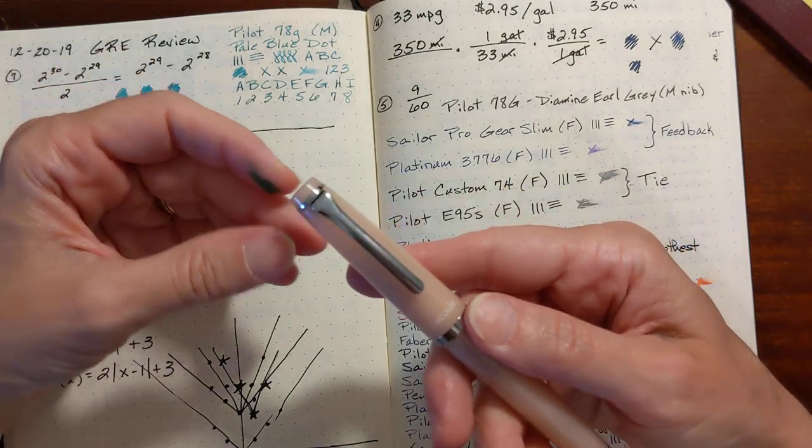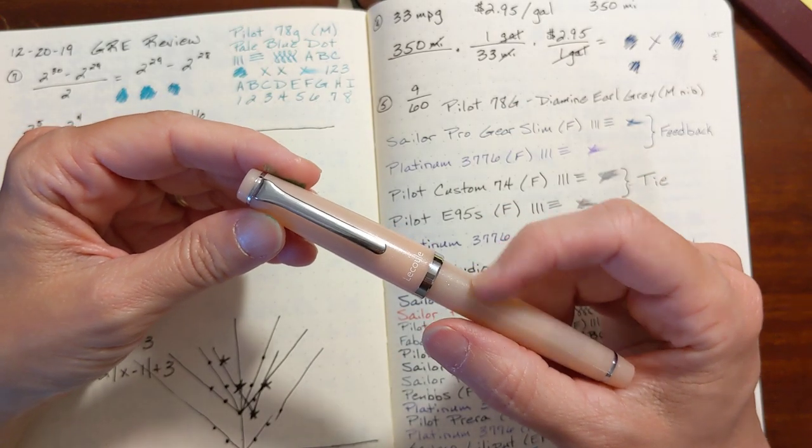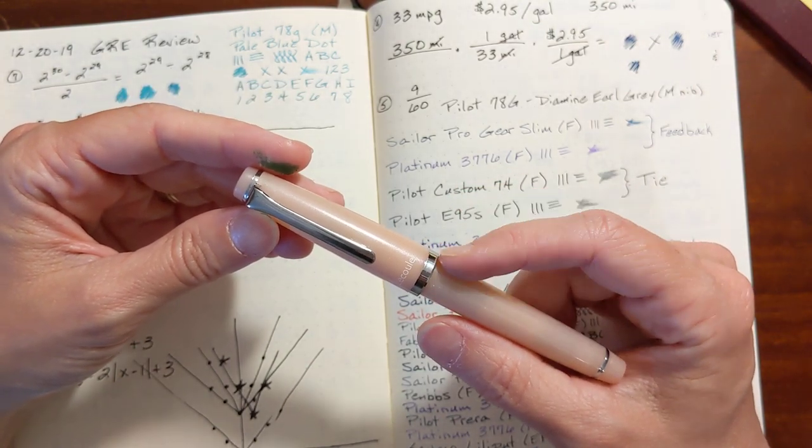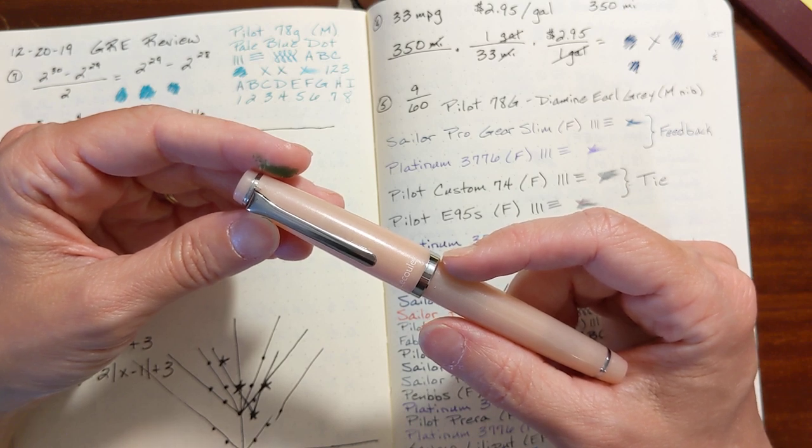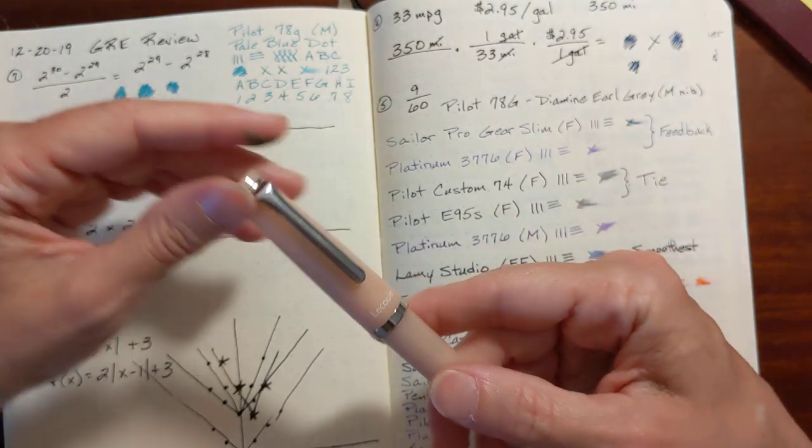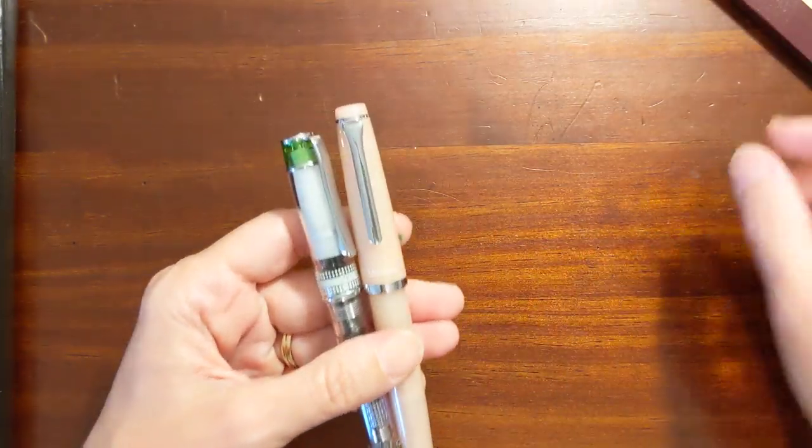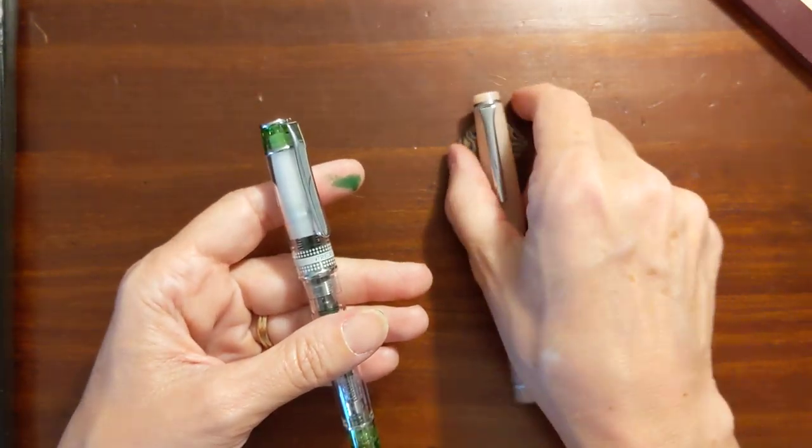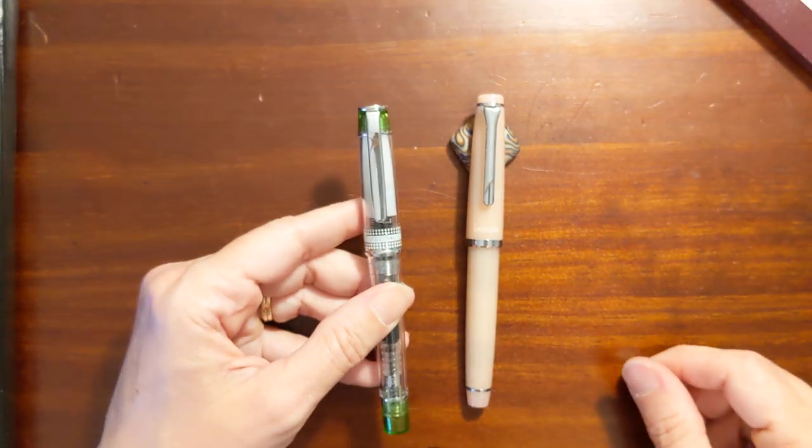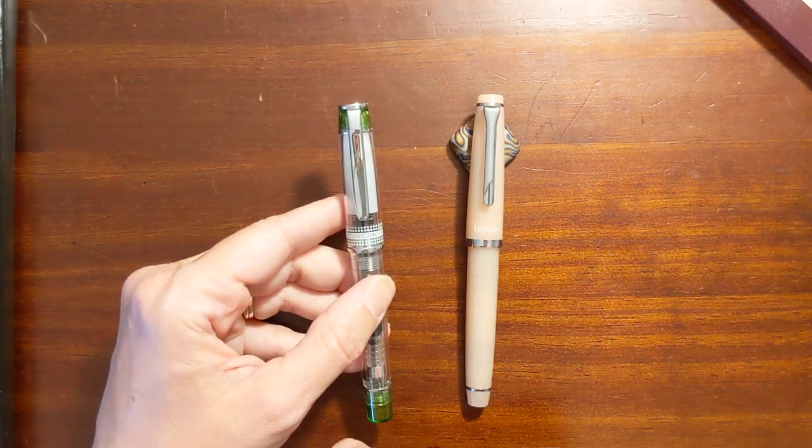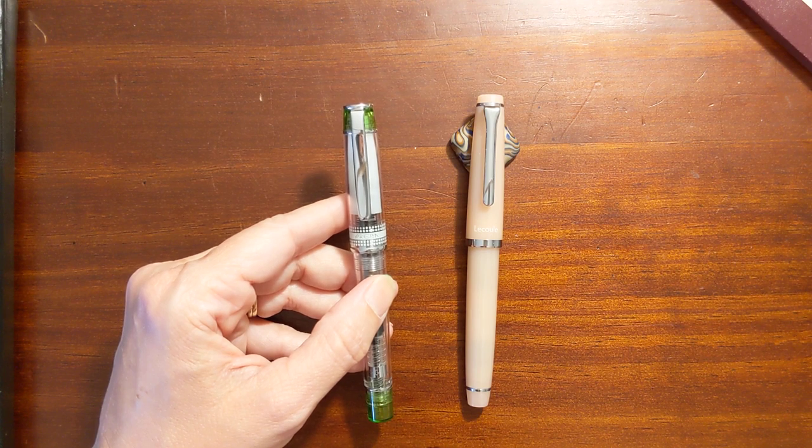So I like the little form factor of the Lacool. I just probably need to do a little more smoothing on the nib. I think I've run this over the micromesh before. But I might do it again. So that's kind of how the Prera and the Lacool stack up. It's as you would expect. The Sailor nib has more feedback than the Pilot.